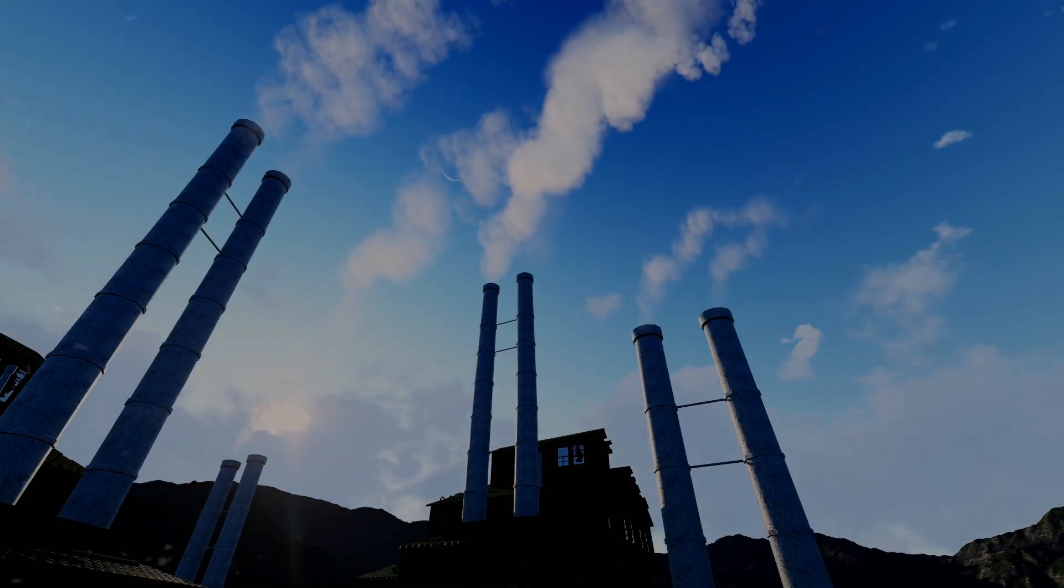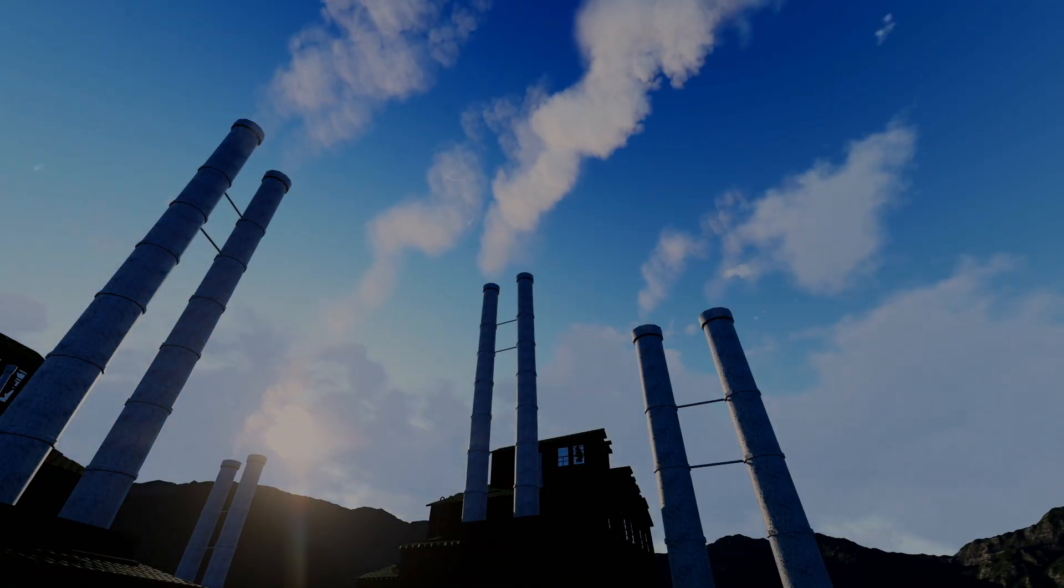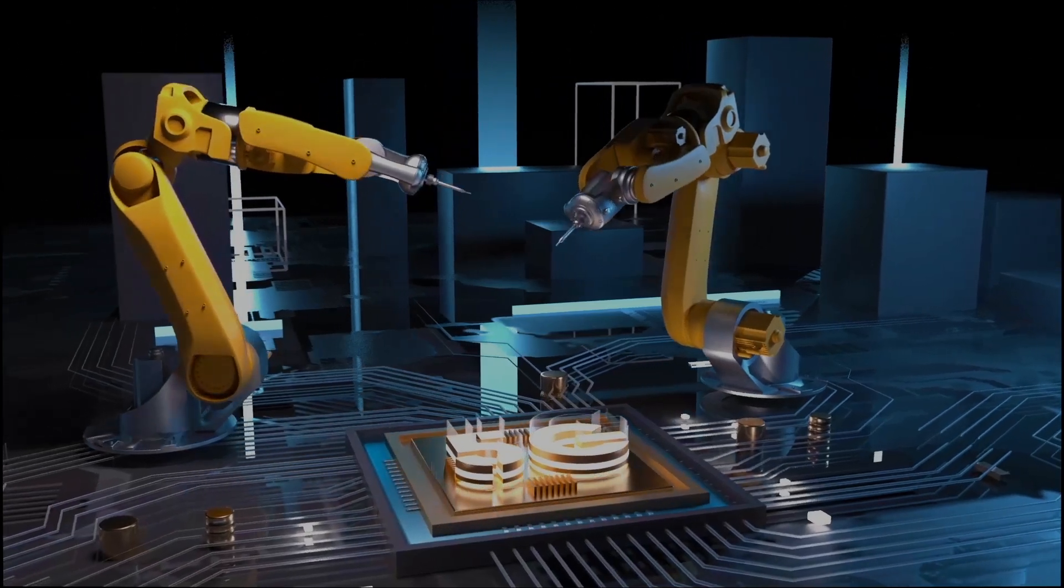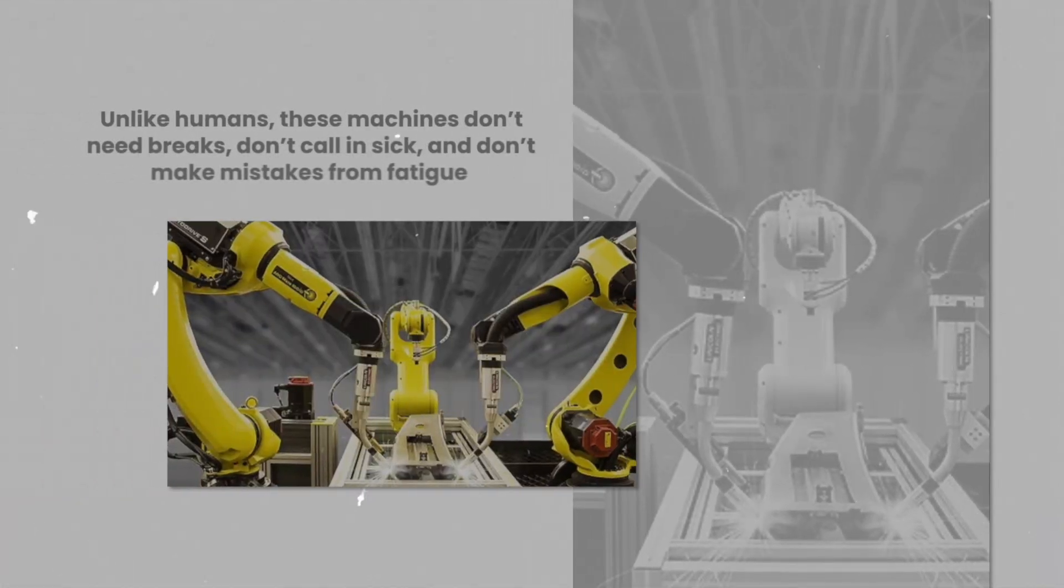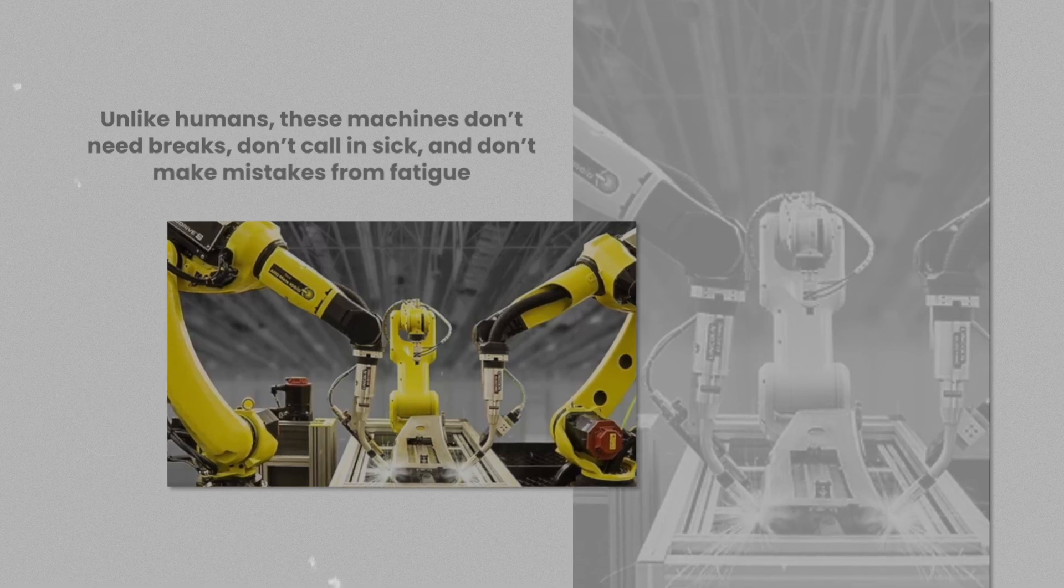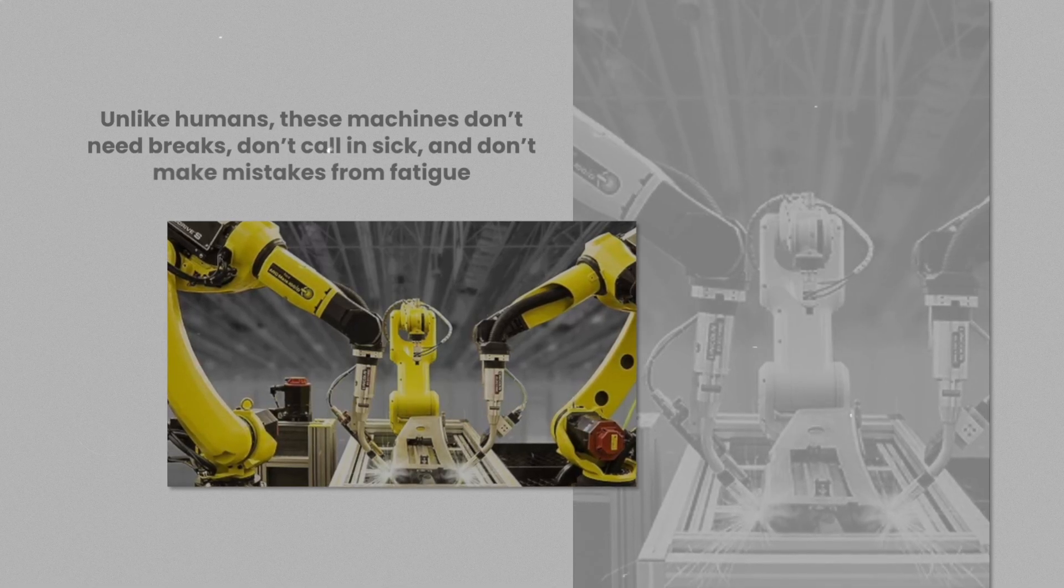In manufacturing plants across the globe, the impact is undeniable. Millions of workers have already been replaced by robotic arms and automated conveyor systems. Unlike humans, these machines don't need breaks, don't call in sick, and don't make mistakes from fatigue.